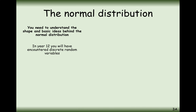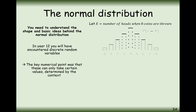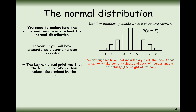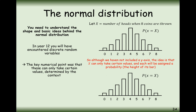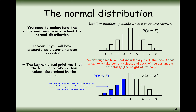In maths we have lots of different probability distributions based on the different characteristics that the data can have. For example, in the first year we saw the binomial distribution, whereby if we have a set number of trials and we're looking for a number of either successes or failures out of those trials, we can use the binomial distribution to calculate those probabilities. The PD function gives the probability of exactly 4 successes, while the CD function — the cumulative distribution function — gives the probability of 3 or fewer successes.